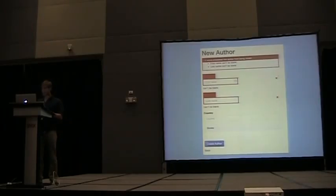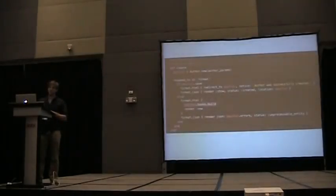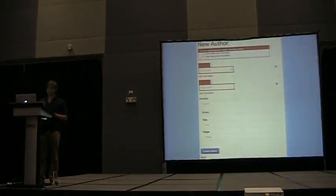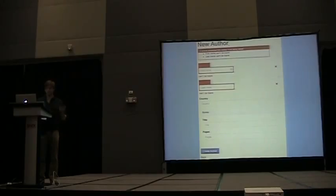To fix this, I have to go into my create action. When the author fails to create, I have to then rebuild my books object. So once I add this, I can then submit my form and get the right errors that I need, and the fields are back for my books. But I still don't have any validations on them.